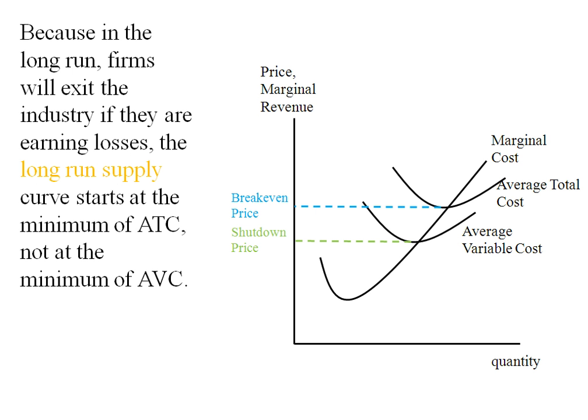In the long run, firms will exit the industry if they're earning any losses. So the long-run supply curve is going to start at the minimum of the ATC, not the minimum of the AVC. Our short-run supply curve starts at the minimum of the AVC; the long run starts at the ATC.